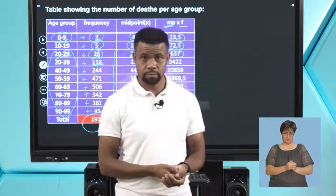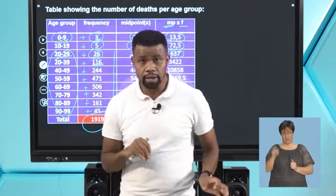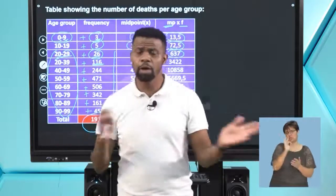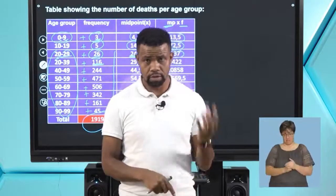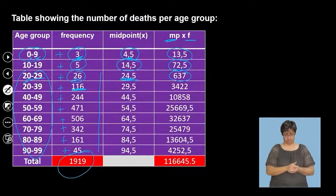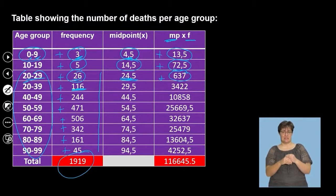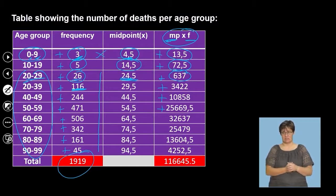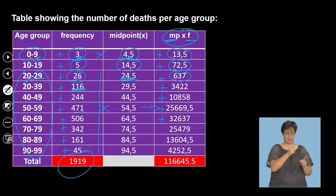From there, we add all the midpoint-times-frequency products across every age group. Remember, each value in that column is midpoint multiplied by frequency for its respective group. We add all of those together to get the sum of midpoint times frequency — this is the numerator for our mean calculation.